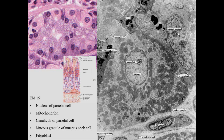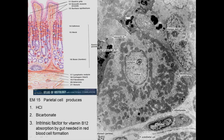A mucus neck cell also contains mucus. One important feature of parietal cells is that they produce hydrochloric acid. Interestingly, they also produce bicarbonate, which helps dampen the effect of the hydrochloric acid on the stomach itself. Additionally, parietal cells produce intrinsic factor, which is needed for vitamin B12 absorption by the gut.